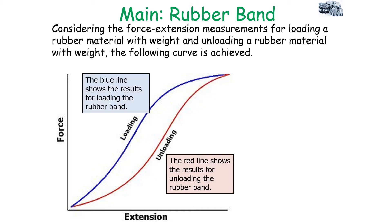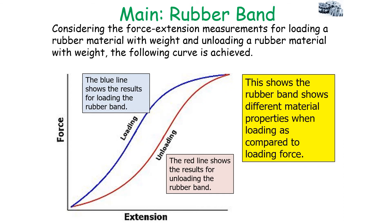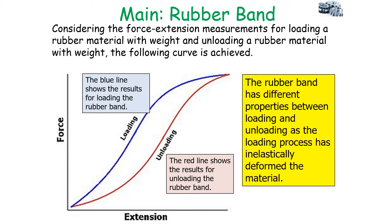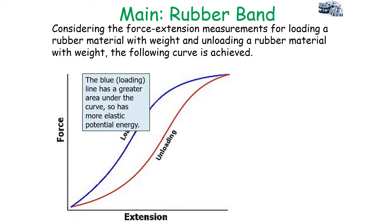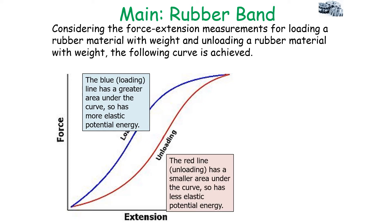We have two different lines: one for loading and one for unloading the rubber material. This shows that the rubber band has different material properties when loading compared to unloading. This is important because it tells us that the loading process has inelastically deformed the material. The loading line has a greater area under the curve, so when the material is being loaded it is storing more elastic potential energy.